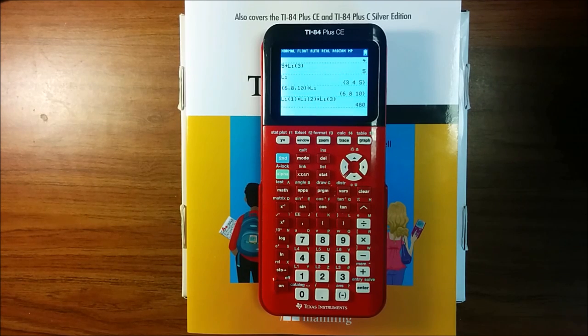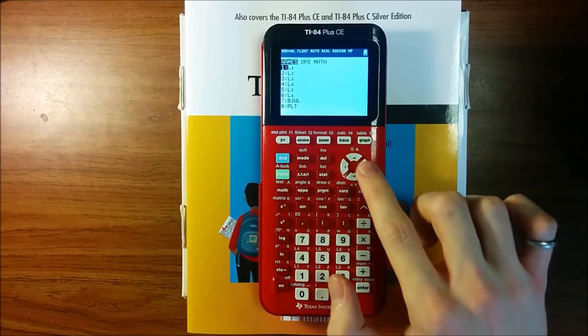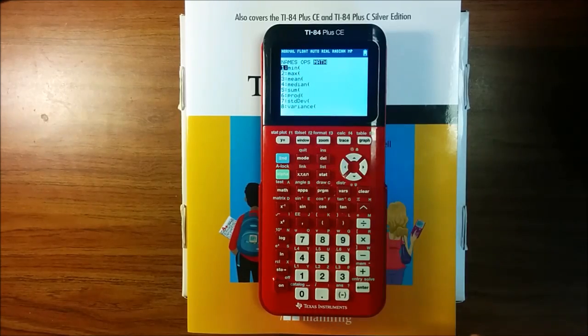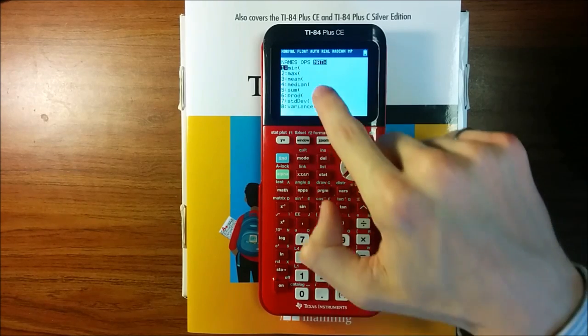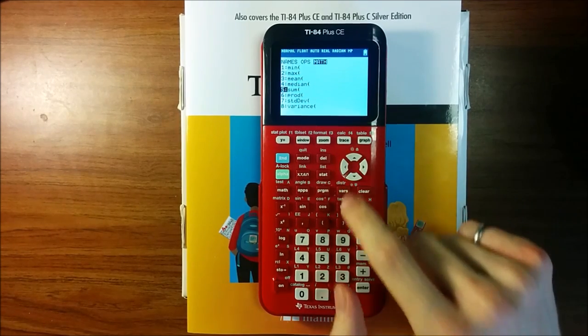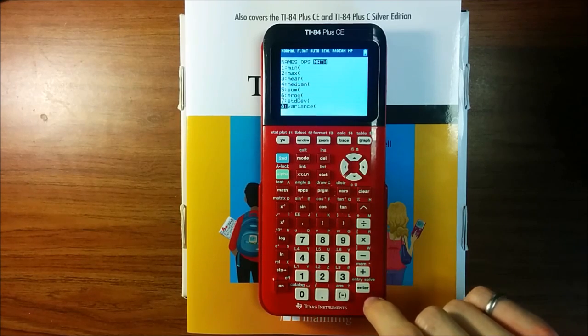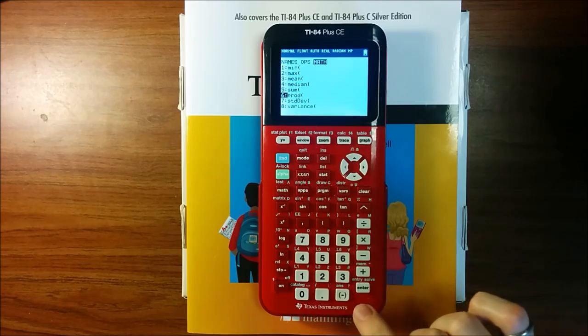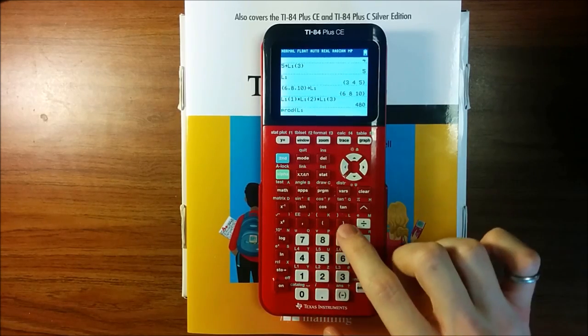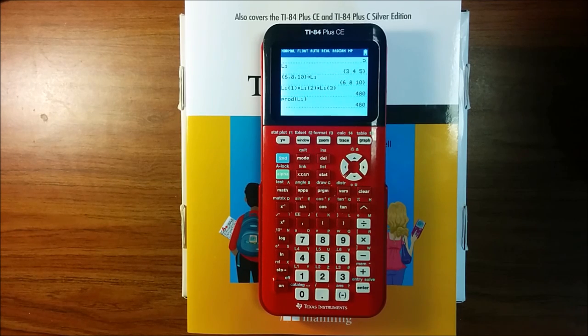Another thing we can do is use one of the several commands available in the list menu, second, stat, to perform math on a list. You can find the minimum value, the maximum value, the mean value, which is the average of all the items in the list, the median, the sum, the product of every element in the list, and even the standard deviation and the variance of all the items in the list. We want to find the volume of a box with dimensions stored in the list, so we'll use the product, or prod, of l1. This will multiply every element in l1 and return that product. Again, it's 480, just as we'd expect.